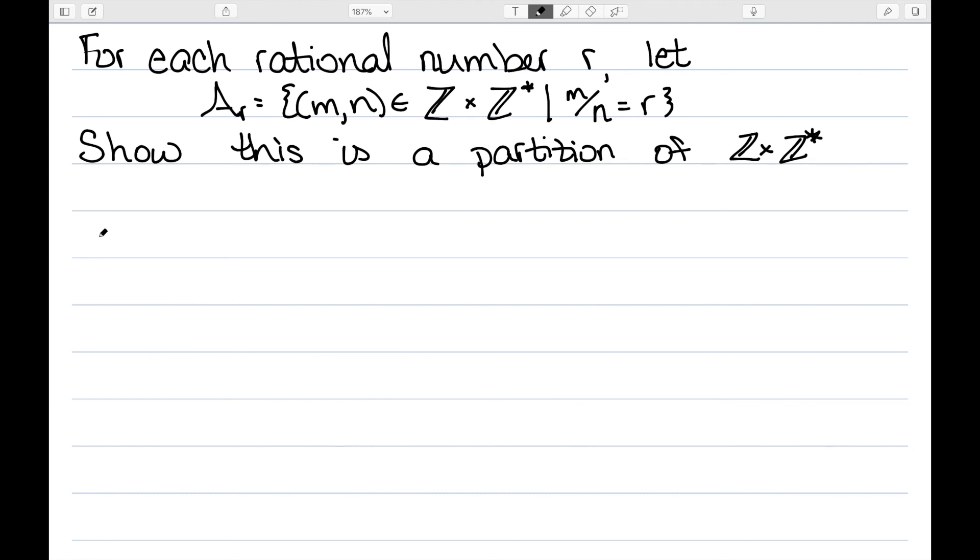And I want to show this as a partition of Z × Z*. So there are two things I need to show. The first thing I need to show is that Aᵣ intersect Aₛ is equal to the empty set for all values r not equal to s.